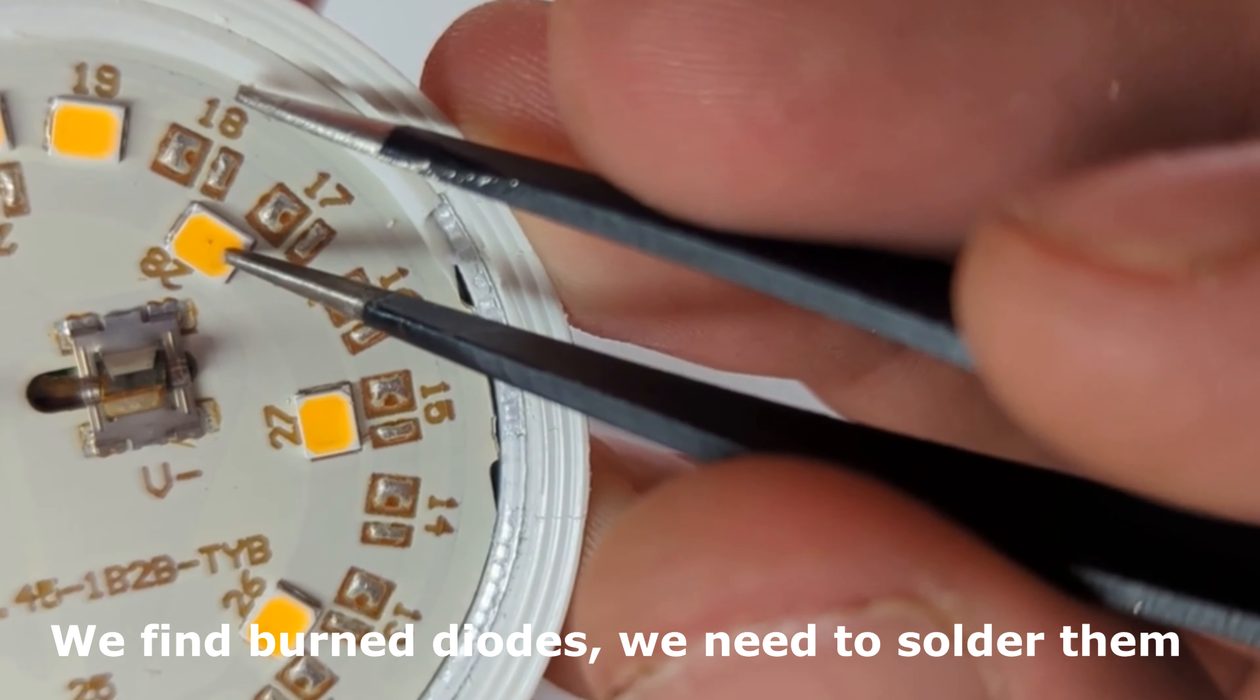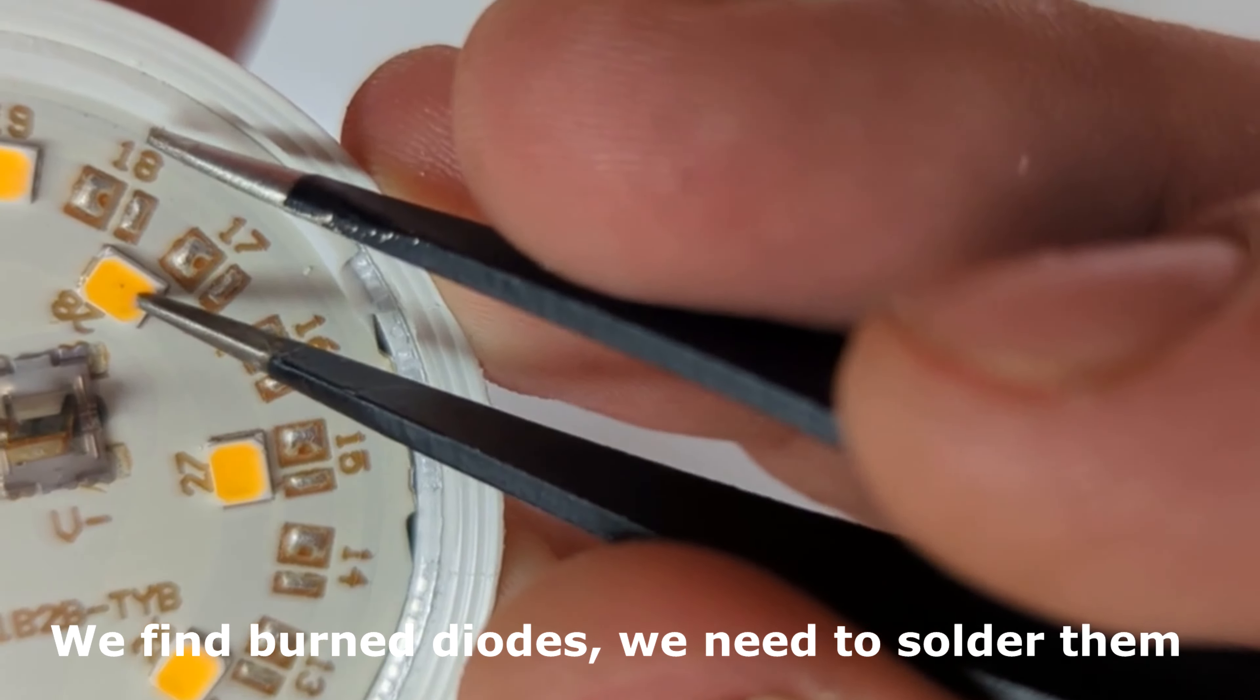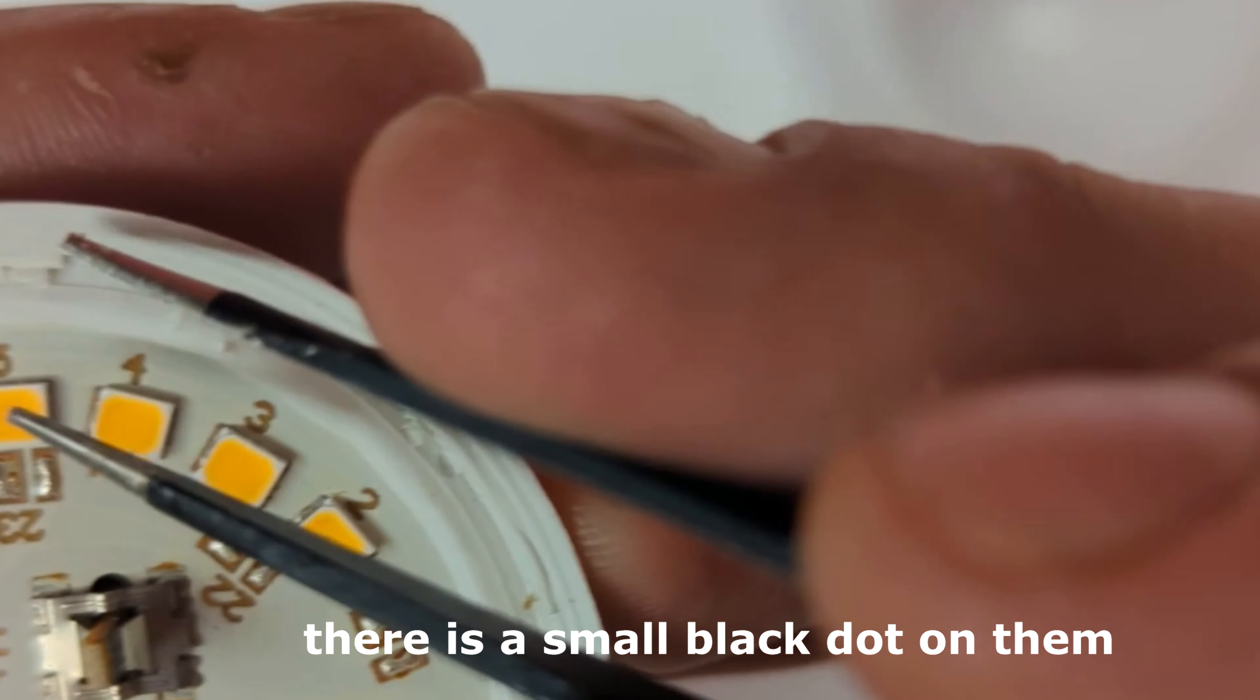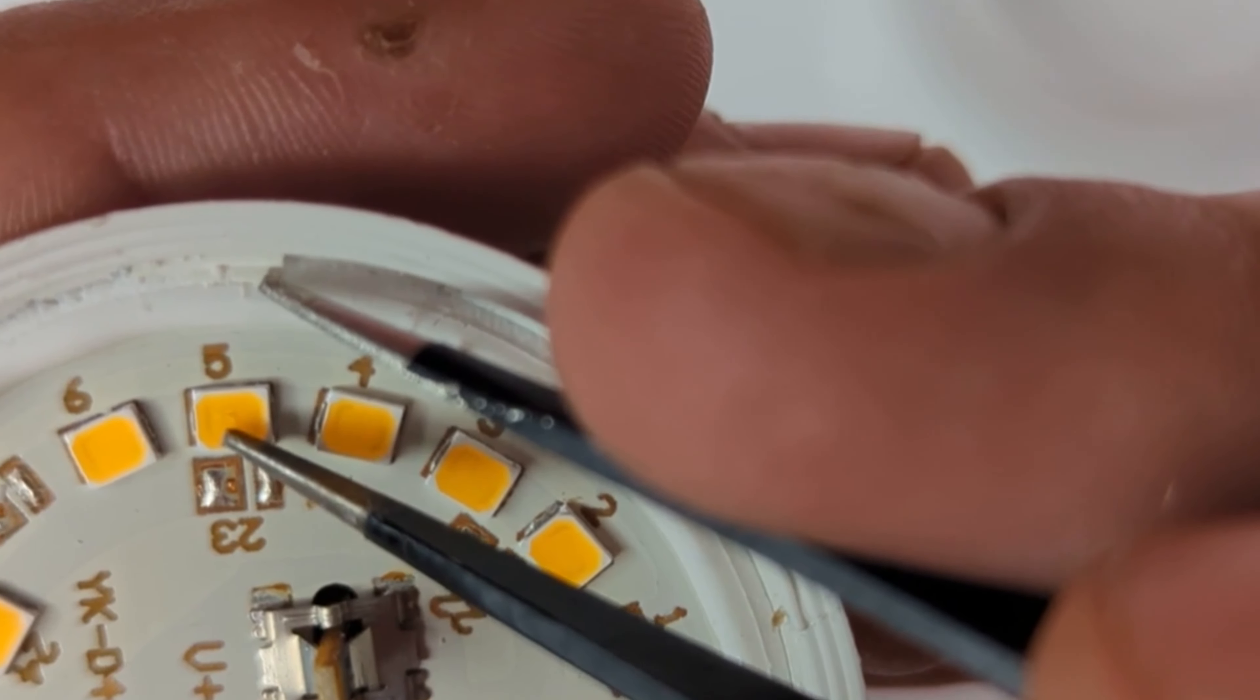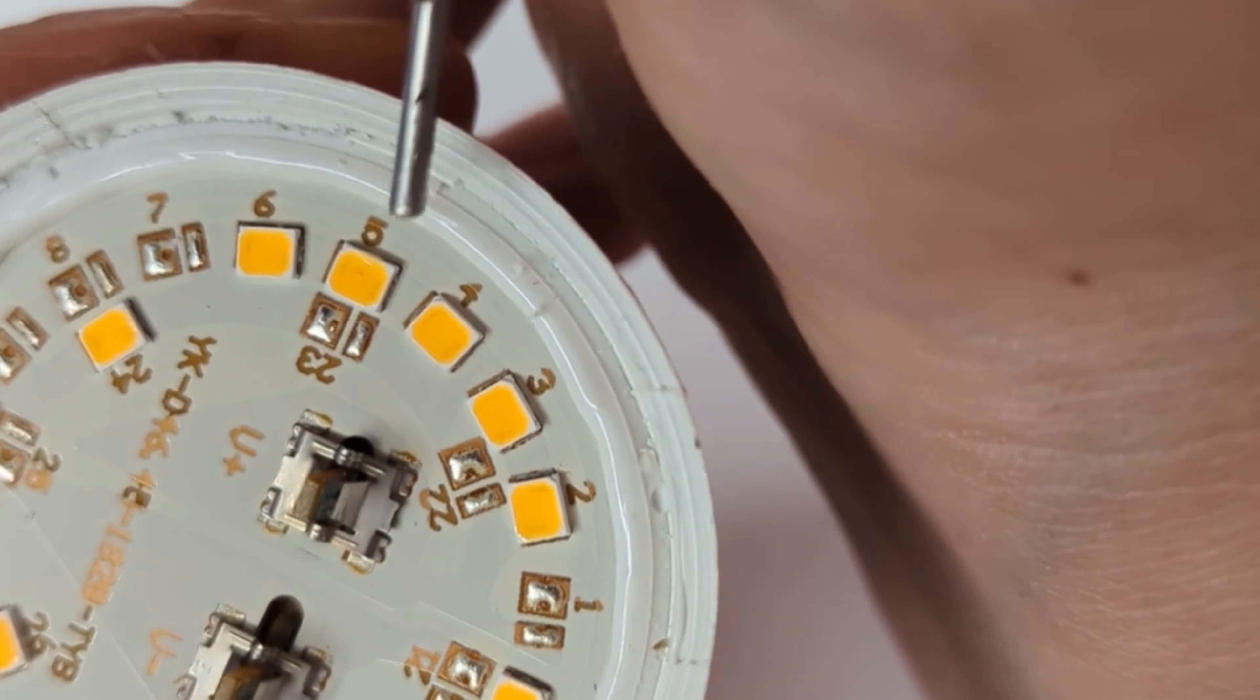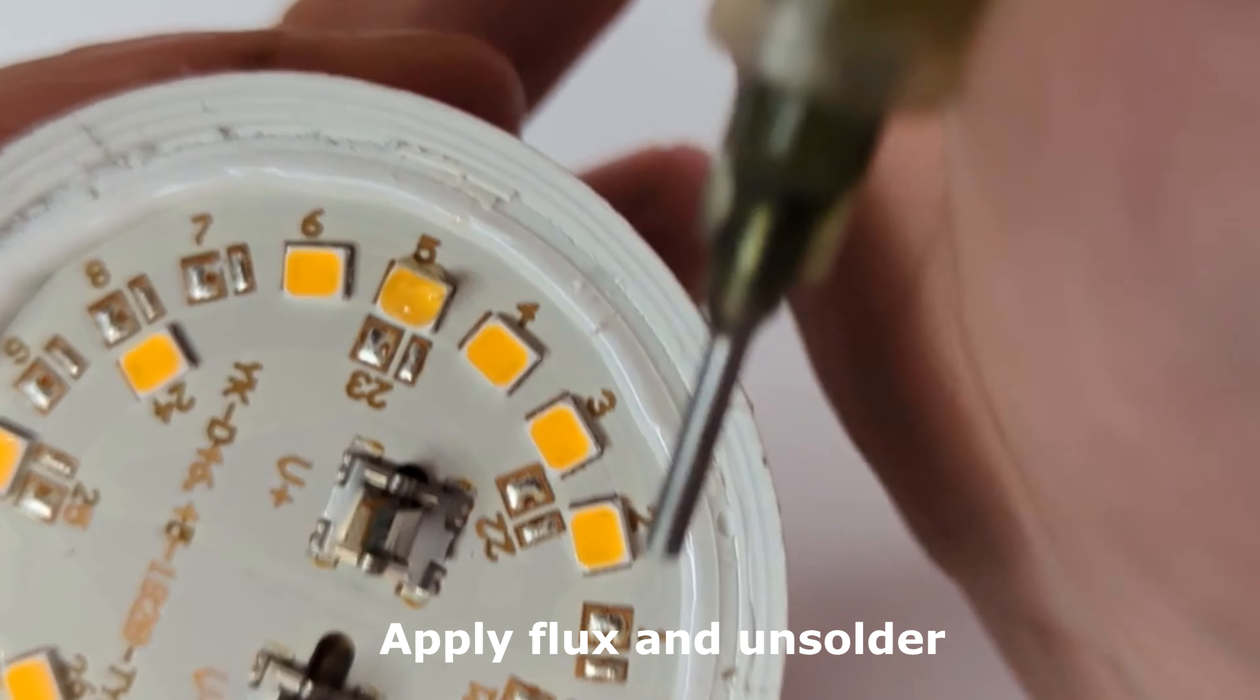We find burned diodes, we need to solder them. There is a small black dot on them. Apply flux and unsolder.